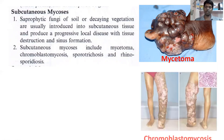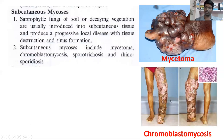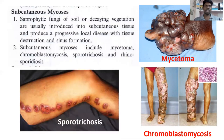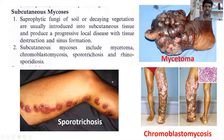Chromoblastomycosis is another subcutaneous infection showing severe infection of the leg. Sporotrichosis is also a subcutaneous fungal infection. All these infections are caused by various types of subcutaneous fungi. In summary, subcutaneous mycoses infect the subcutaneous layer resulting in progressive local disease with tissue destruction and sinus formation, including mycetoma, chromoblastomycosis, and sporotrichosis.